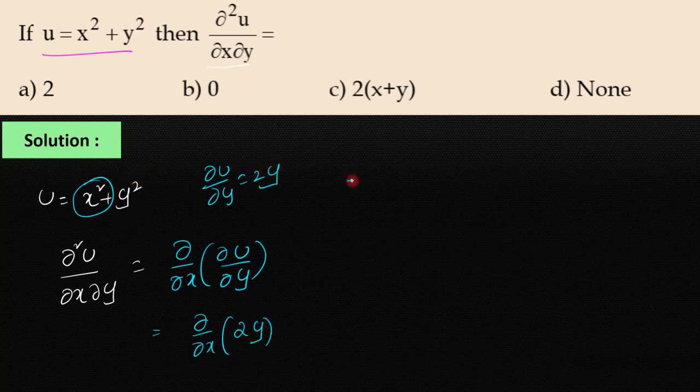Now differentiating with respect to x: 2y is constant, so the differentiation is 0. Therefore, the answer is option B.